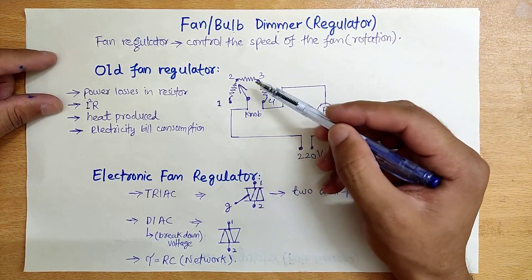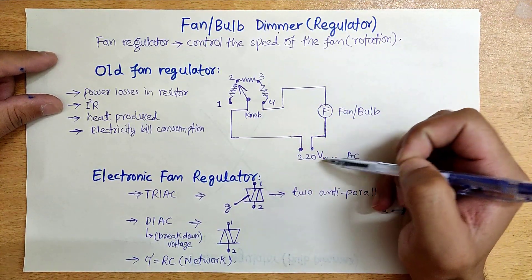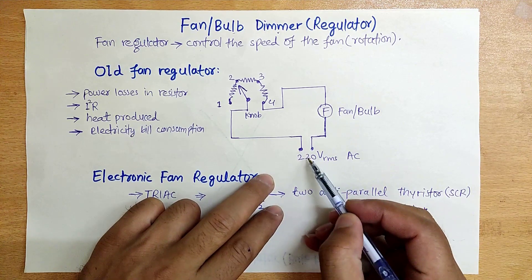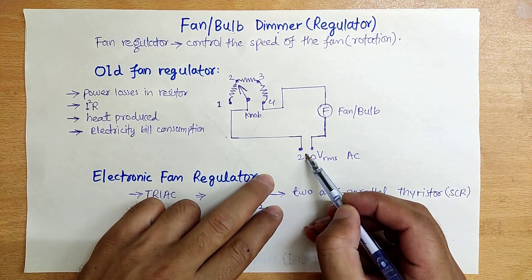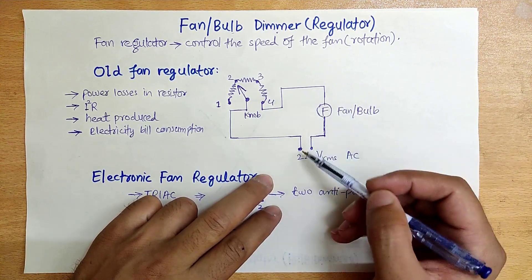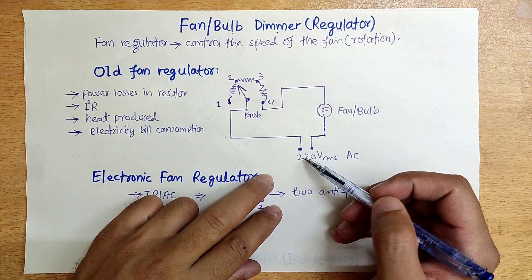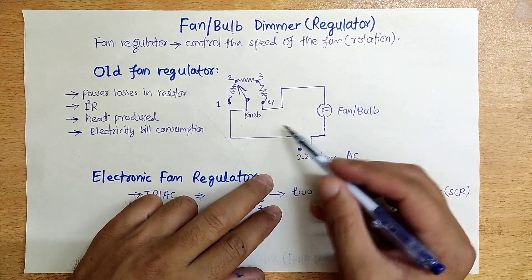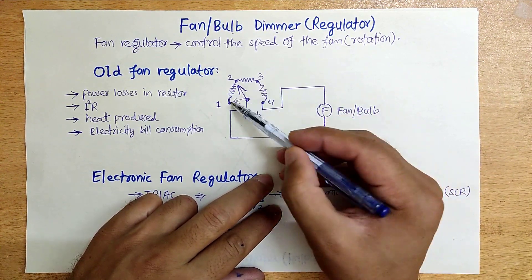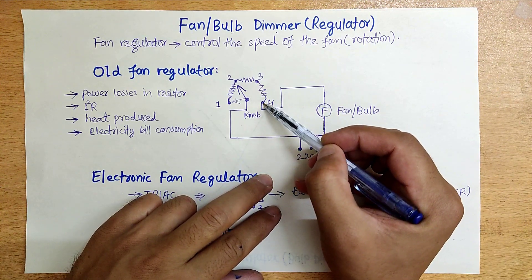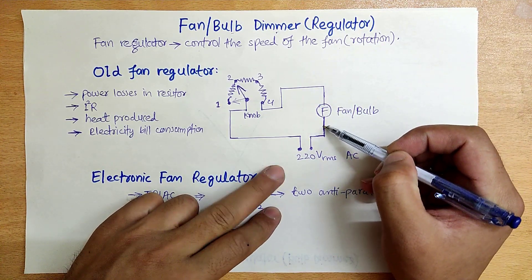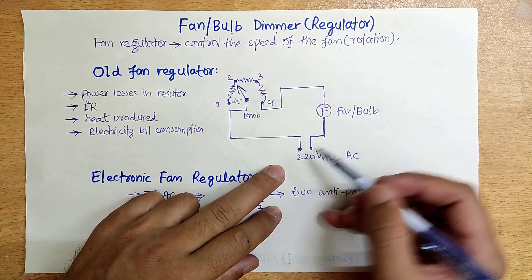The old-fashioned fan regulator consists of a resistive network connected to the fan, with our AC input voltage here. In a conventional or old-fashioned regulator, we give a 220 AC volt input, then we have a resistor network and our fan. If I rotate the knob, we will increase this resistance, which means more voltage drop will occur and our fan will get a lower voltage.